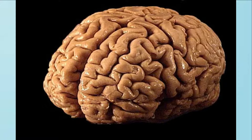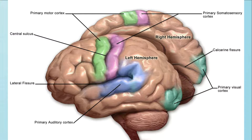The cerebral cortex is the wrinkly outer covering that surrounds the brain. In general, it is responsible for executive processing. This means that the cortex handles more complex thoughts and tasks like problem solving, decision making, and perception. The cortex is divided into two hemispheres, the left and the right, and four sections called lobes.